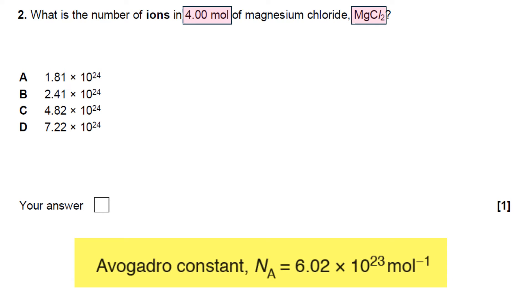You're going to need to use Avogadro's constant which is at the bottom of the screen from the OCR Chemistry A data sheet. That basically means that one mole of anything contains 6.02 times 10 to the 23 particles. So if you've got four moles of something that will contain four times that amount.